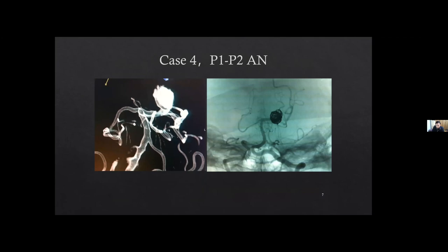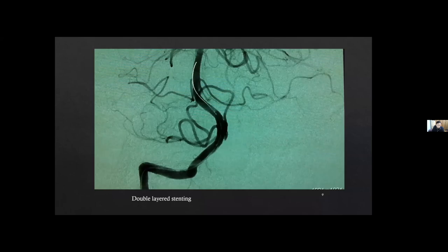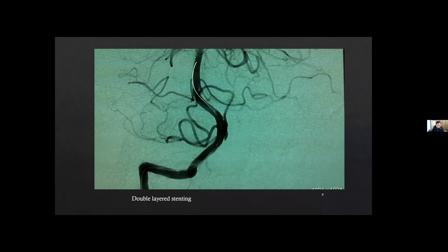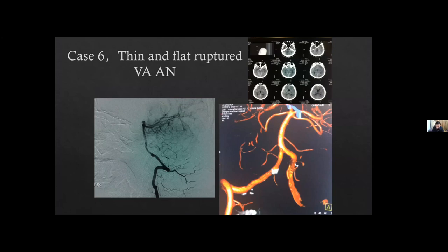This is a P1 to P2 aneurysm, still treated with stent plus coils. Another vertebral dissecting aneurysm: we can see the double lumen sign on 3D DSA, treated with double-layered stenting, and the long-term follow-up is very good. A flat ruptured vertebral artery aneurysm — the dome was very flat but ruptured, a dissecting aneurysm — was also treated with stent plus coils with a very good result.